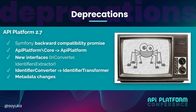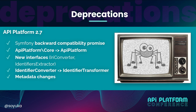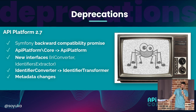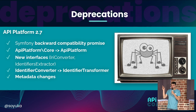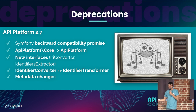About deprecations. In API Platform 2.7, we kept the Symfony backward compatibility promise. We changed the namespace from API Platform dash core to API Platform, so the legacy code will be under core. There are new interfaces under IRI converter and identifiers extractor. And we changed the name of the identifier converter to identifier transformer.